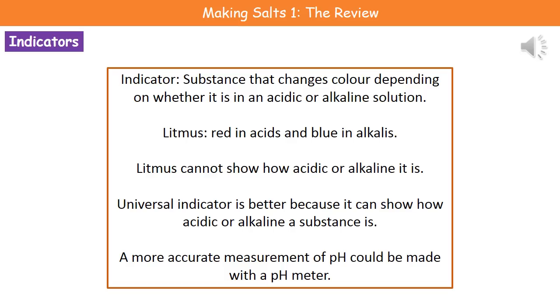In order to determine whether a substance is an acid or an alkali, what we need to do is use something called an indicator. An indicator is just a substance that's going to change colour depending on what solution we put it in.